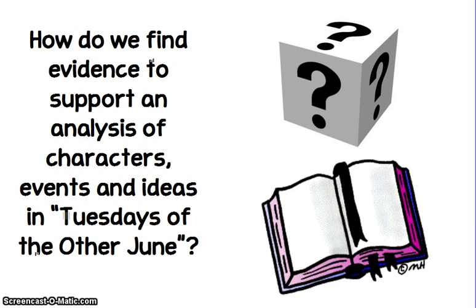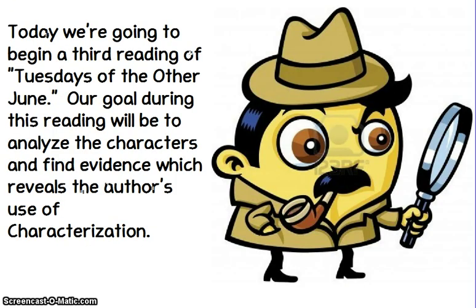Hey guys, it's Ms. Arlequin, and today we're going to be looking for evidence that can support the author's use of characterization in Tuesdays of the Other June. We're going to begin the third reading of the story, and our goal during this reading is going to be to analyze the characters and find text evidence that reveals Norma Fox-Maser's use of characterization.